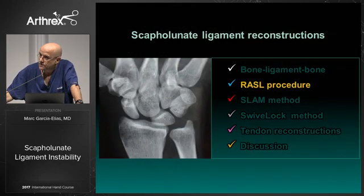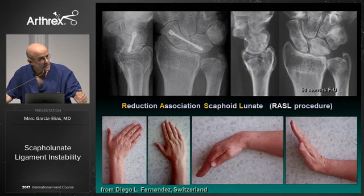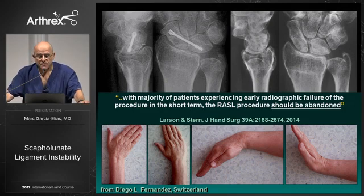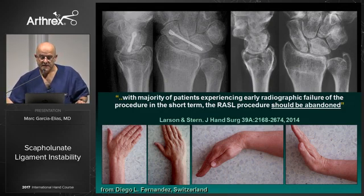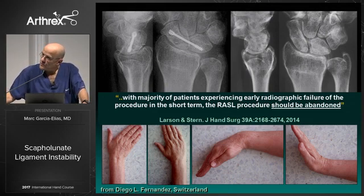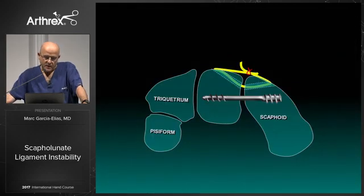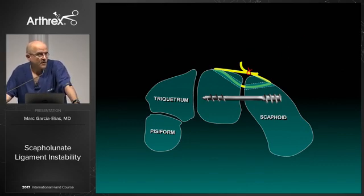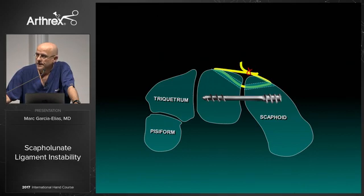What about the RASL procedure? The RASL procedure — Reduction Association of the ScaphoLunate — just places a screw across what we believe is the cause of instability. The problem is that in the majority of patients in the work by Larsen, they found radiographic failure of the procedure in the short term. So the RASL procedure should be abandoned according to their opinion. However, I think there is an indication for RASL, particularly in high-energy trauma when you should mobilize the wrist very early, otherwise stiffness is inevitable.